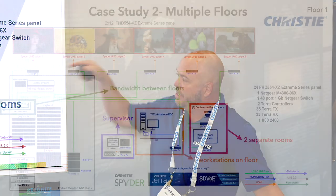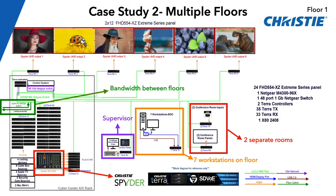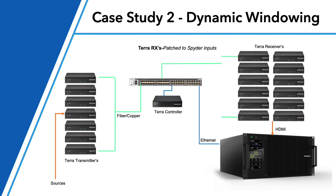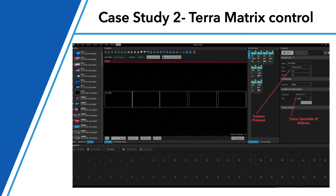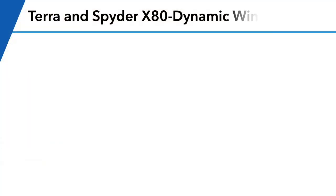One feature that's very different in this application is that we added a Spider. With the Spider, I have Terra upstream and downstream of it — the Spider gives you dynamic windowing. They wanted a dashboard capability: any source, anywhere, at any time. And the Spider can control the Terra matrix using our Christie-Terra protocol. Here's a quick diagram of what that looks like: transmitters, Terra controller, your network switch, and receivers go into the inputs of the Spider. Now I can route Terra transmitters or sources to the Spider, and inside our Spider software we have total control of that matrix router — giving customers that dynamic windowing dashboard video wall experience.